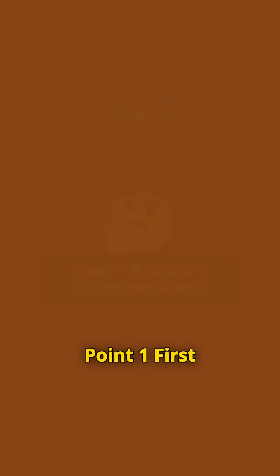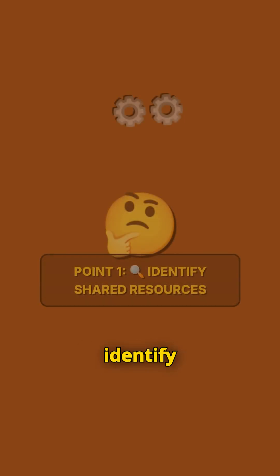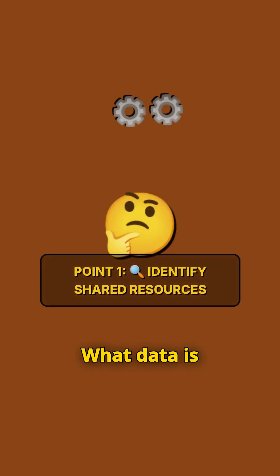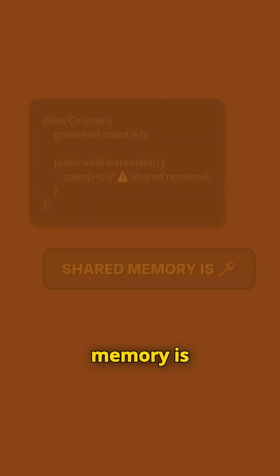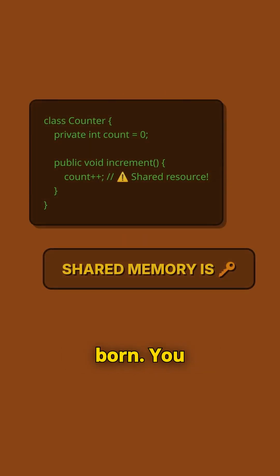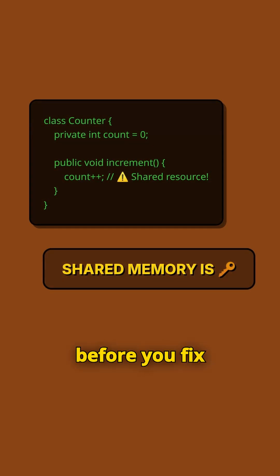Point 1: First, identify shared resources. What data is being accessed by multiple threads? Shared memory is where bugs are born — you've got to find it before you fix it.